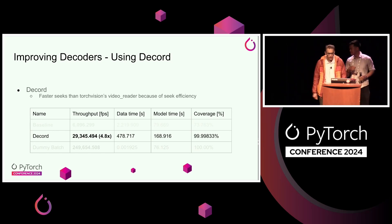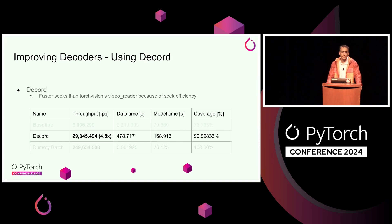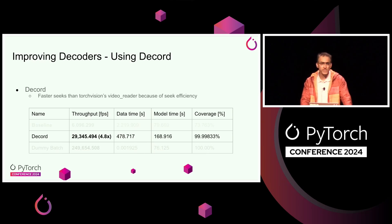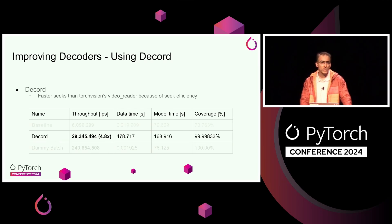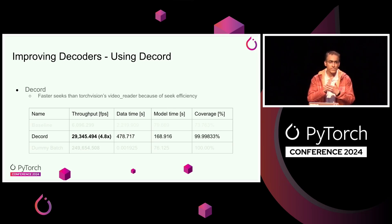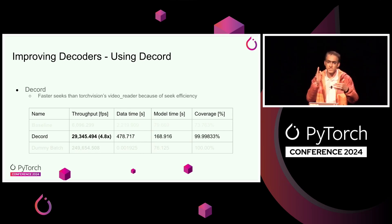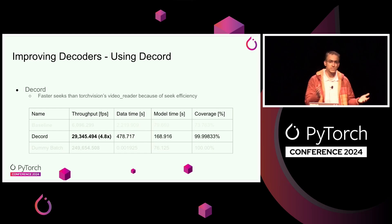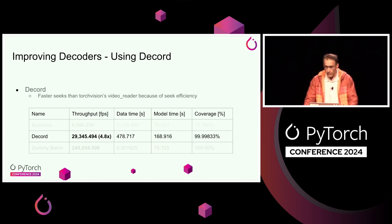My name is Ahmad and I work on the Torch Codec video decoding library. As Andrew mentioned, video decoding is quite compute intensive. A video is a sequence of images that is highly compressed. A decoder's job is to take a video and a timestamp from the user and extract an RGB image displayed at that timestamp, returned as a PyTorch tensor. This process involves seeking into the video at that timestamp, decompressing it, doing a color conversion from YUV format to RGB format, and then converting that into a tensor. If you do any of these processes wrong, you can get correctness or performance issues.